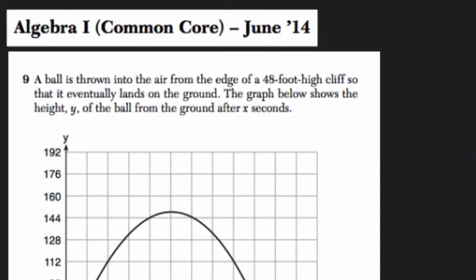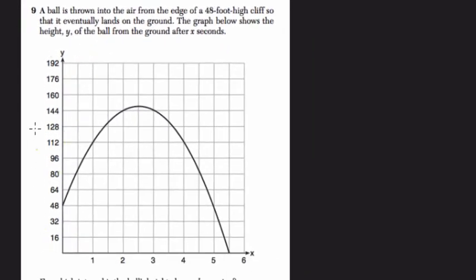Okay, so in this problem, it tells us a ball is thrown in the air from the edge of a 48-foot-high cliff so that it eventually lands on the ground. The graph below shows the height y, so this is our height on the y-axis, of the ball from the ground after x seconds. So x is the seconds, y is the height. It might be a good idea as you approach this problem to label that so we don't lose track of that.